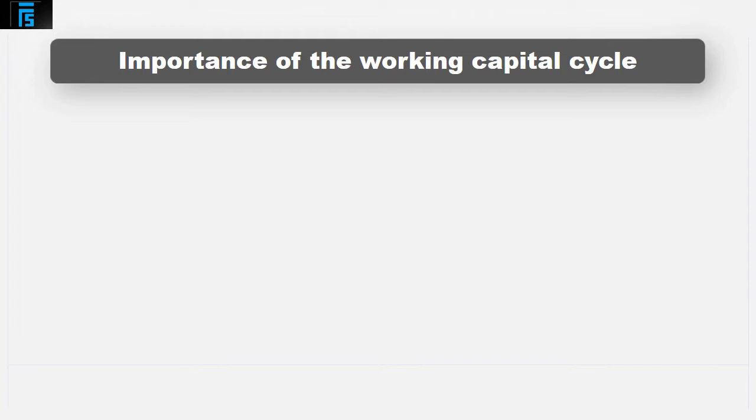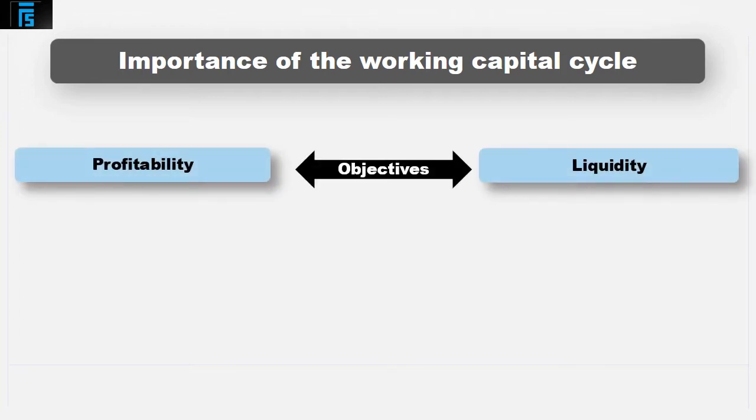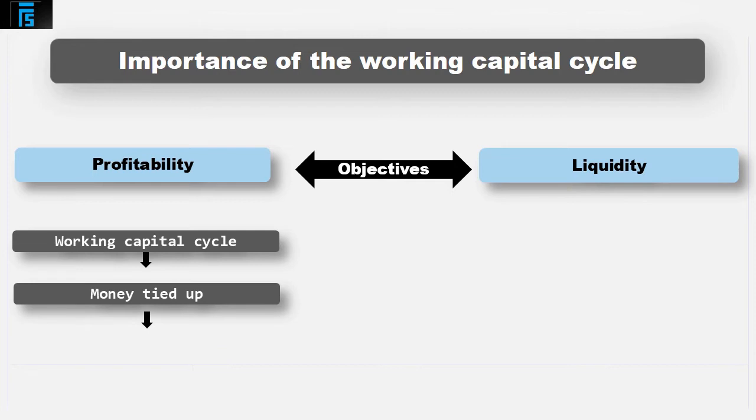In a previous presentation, an introduction to working capital, it was explained that profitability and liquidity were the objectives of working capital management. To date, this presentation has described that it is usual for a business to pay out to its suppliers prior to receiving in from its customers. The period between these two points is referred to as the working capital cycle and clearly puts pressure on the liquidity of the business as it is left with no cash with which to pay the bills.